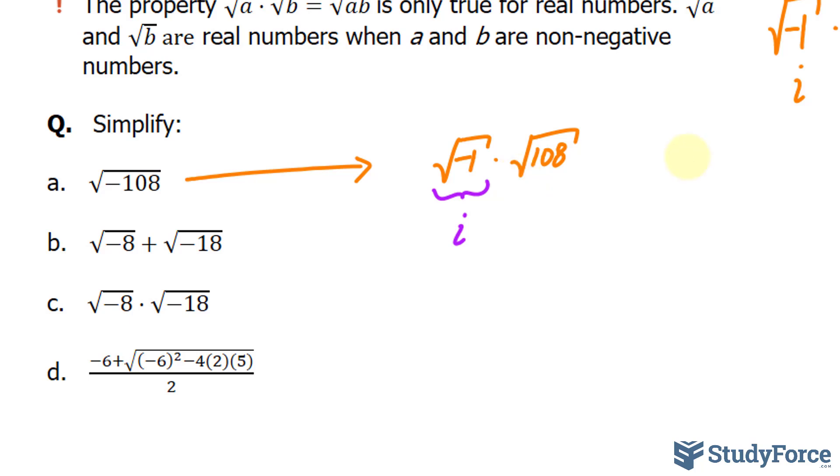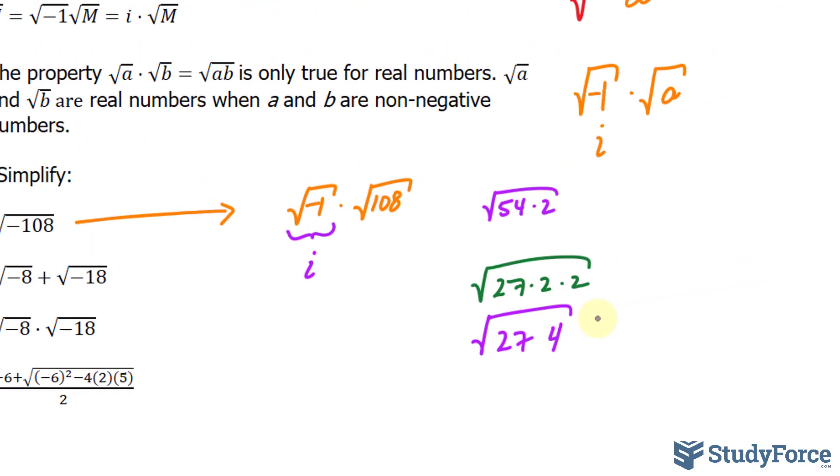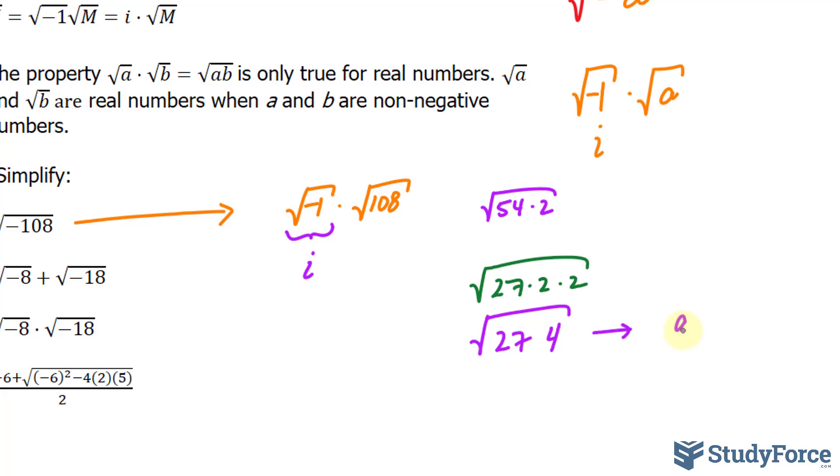108 breaks down into 54 times 2. Neither of these factors are perfect squares, so let's break it down even further. 54 can be broken down into 27 times 2 times 2. 2 times 2 is 4. 27 breaks down into 9 and 3. So we have 9 times 3 times 4.